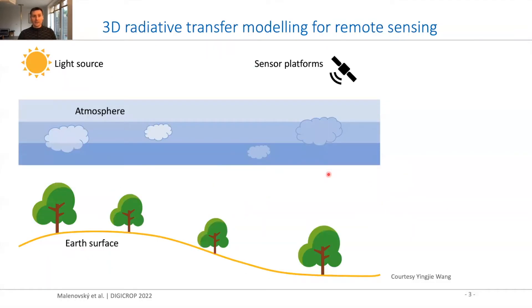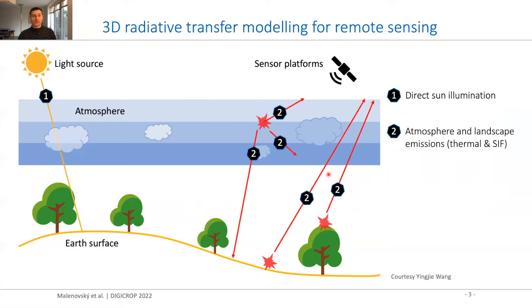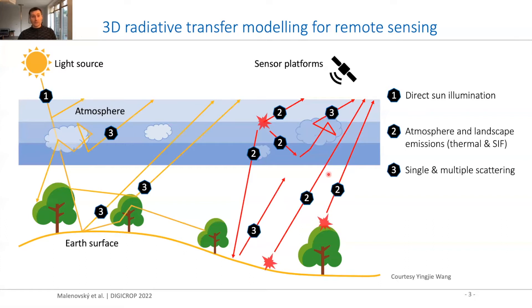At this point we can use 3D radiative transfer modeling as a simulator or virtual machine for producing virtual remote sensing data. These models use as an energy source direct sun illumination, emissions from atmosphere or from a landscape — geothermal or extraterrestrial emissions — or induced chlorophyll fluorescence. Their main purpose is to simulate interaction of electromagnetic radiation with objects on the earth or within the atmosphere. They simulate single and multiple scattering and absorption processes, and couple the earth and atmosphere systems together to produce observations at the sensor level, either above, within, or below the atmosphere.